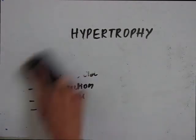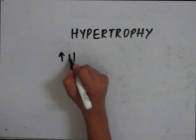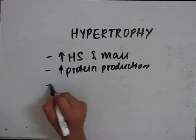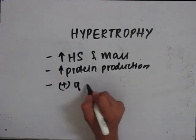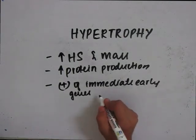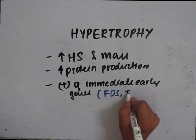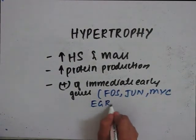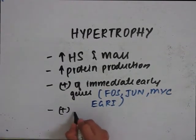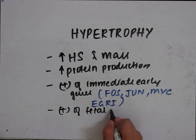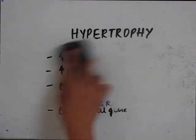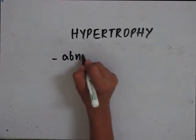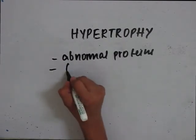Generally in hypertrophy, there is increase in heart size and mass, increase in protein production, and induction of immediate early genes such as FOS, JUN, MYC, and EGR1. There is also induction of a fetal gene program. However, there are some negative things which happen as well — production of abnormal proteins, fibrosis, and inadequate vasculature.